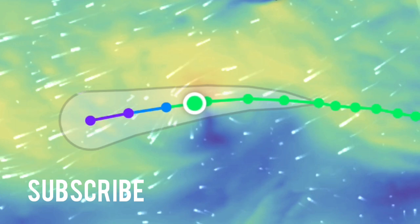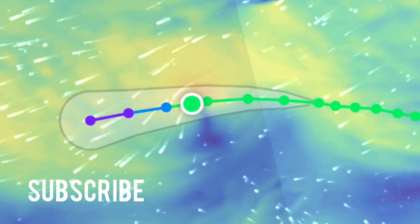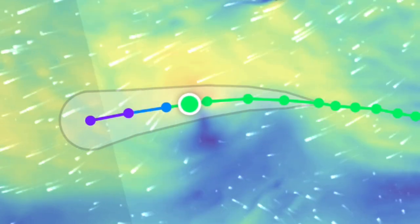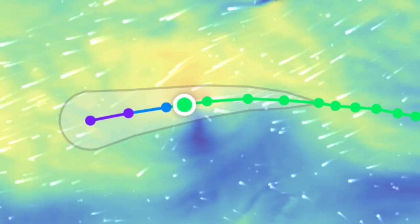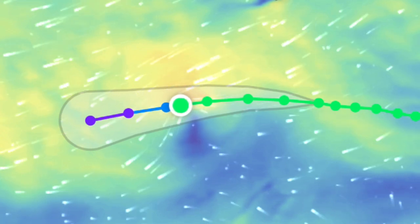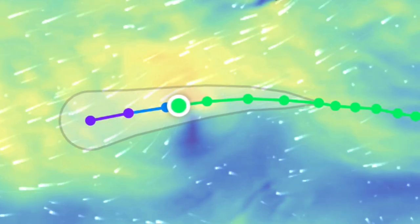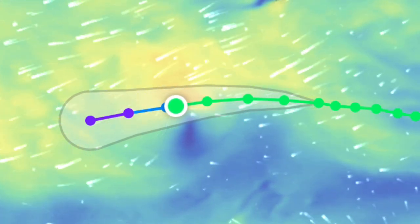Given the tropical cyclone's inability to strengthen within the current shear environment and sufficiently warm sea surface temperatures, the official forecast follows the steady weakening trend of the dynamical guidance beyond 24 hours, and Greg is expected to become a post-tropical remnant low by late Friday or so.